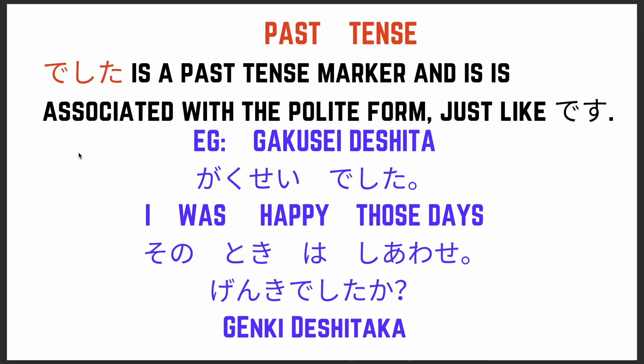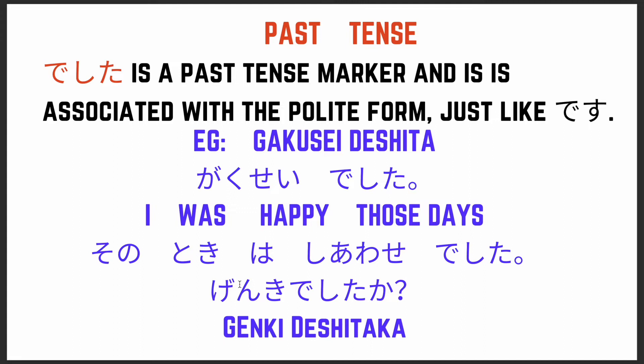Now, to express something in past tense, 'desu' will become 'deshita.' You drop the 'su' and add 'deshita.' We've seen the example 'gakusei desu' — I am a student. So now if you want to say 'I was a student,' you'll say 'gakusei deshita.'